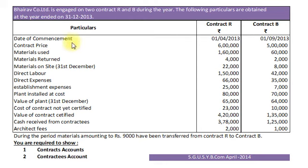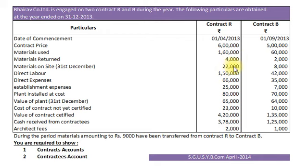Date of commencement of Contract R is 1st April 2013. Contract Price Rs. 6,00,000. Material used to contract Rs. 1,60,000 will be recorded in Contract Account on Debit side. Materials returned from Contract Rs. 4,000 will be recorded in Contract Account on Credit side. Material on Site on 31st December will be recorded as a Closing Work in Progress of Contract R Account.